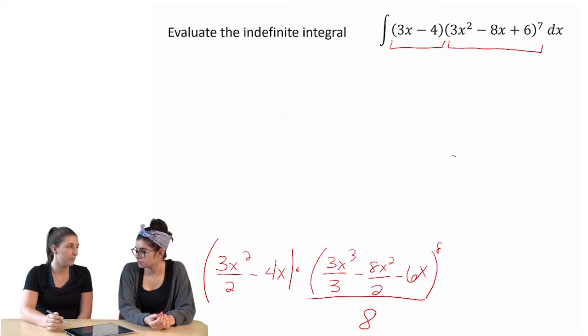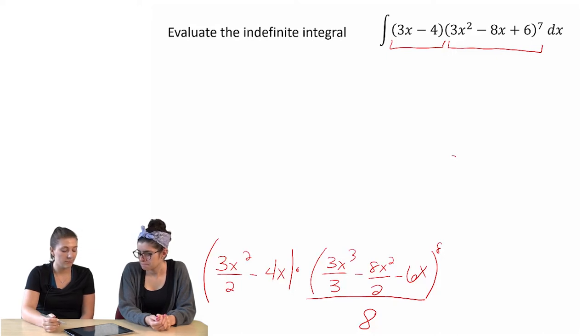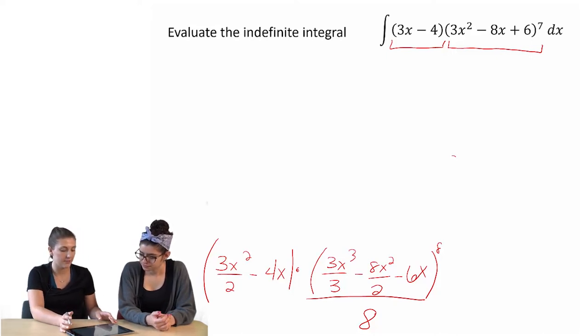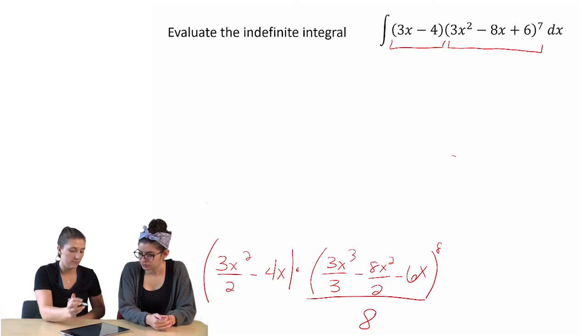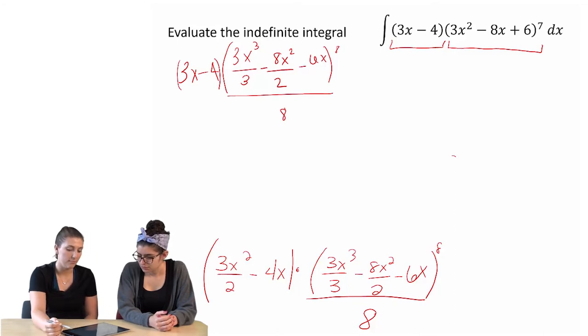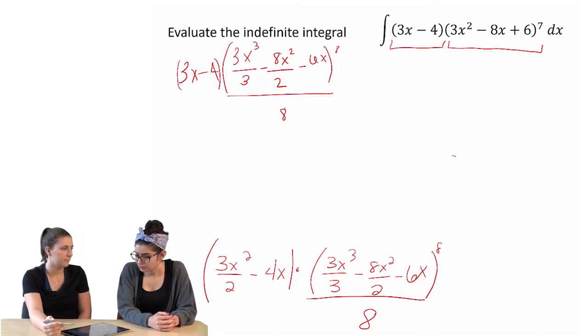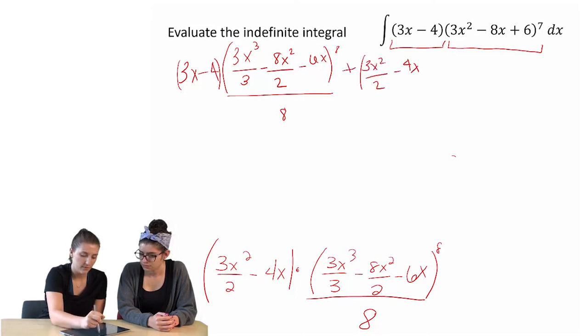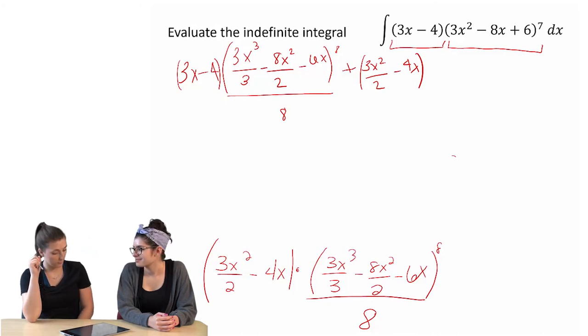So it looks like we're going to have to do the chain rule? Okay. So we'll do the derivative of the first one first. So that gives us 3x minus 4. Mm-hmm. And then we leave the second one. And then... Is it plus or minus? Plus. Leave the first one. Times the derivative of the second one.